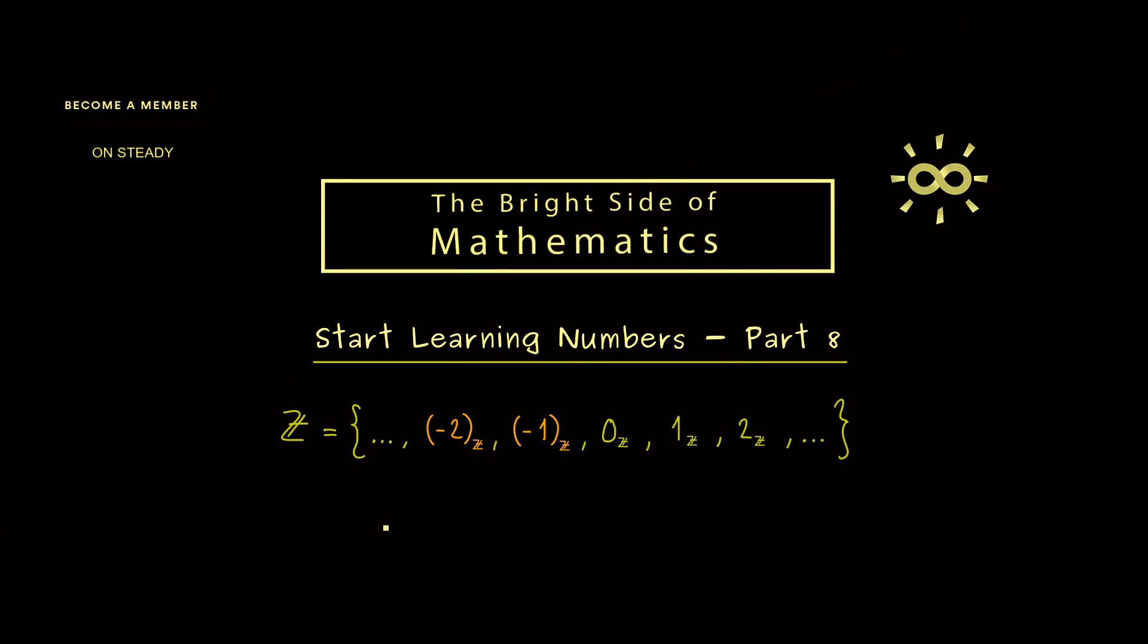We've already learned that we can write the integers as this set. Of course later we can just drop this index here, but for the moment we still need it because we want to define the multiplication by using the equivalence classes. For example, the integer 2 was defined as the equivalence class of (6,4). Here I already told you just think of 6 minus 4.